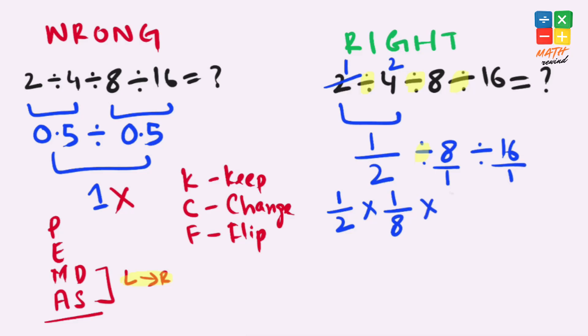Now if you notice, we have two multiplication operators available in this equation, so let's solve the left side first. 1 times 1 gives us 1 and 2 times 8 gives us 16, and our expression becomes 1 over 16.